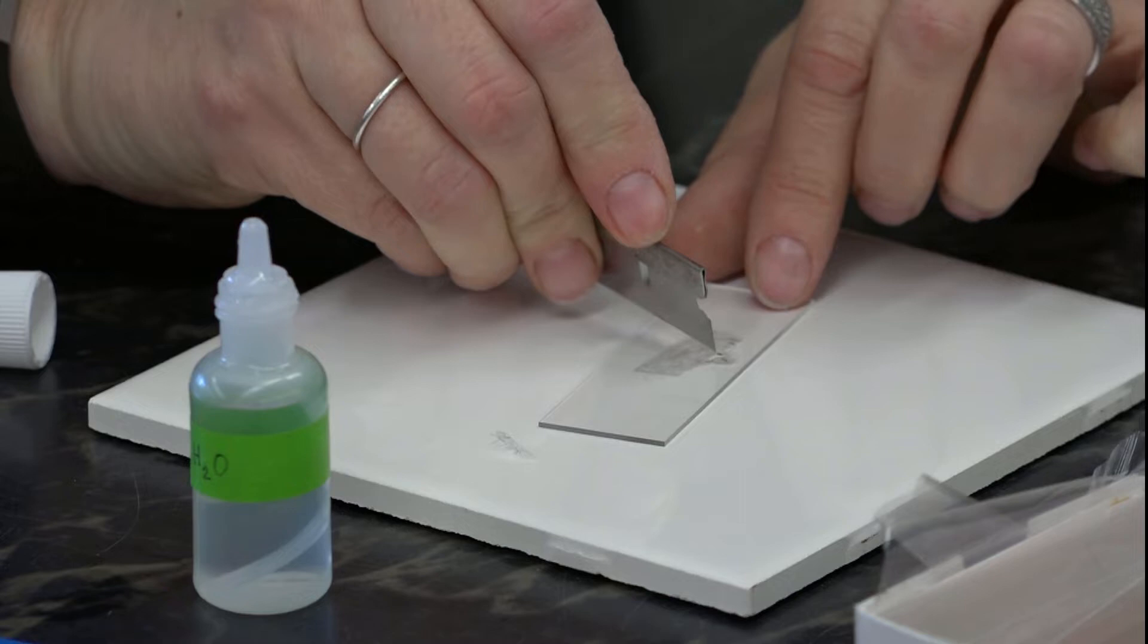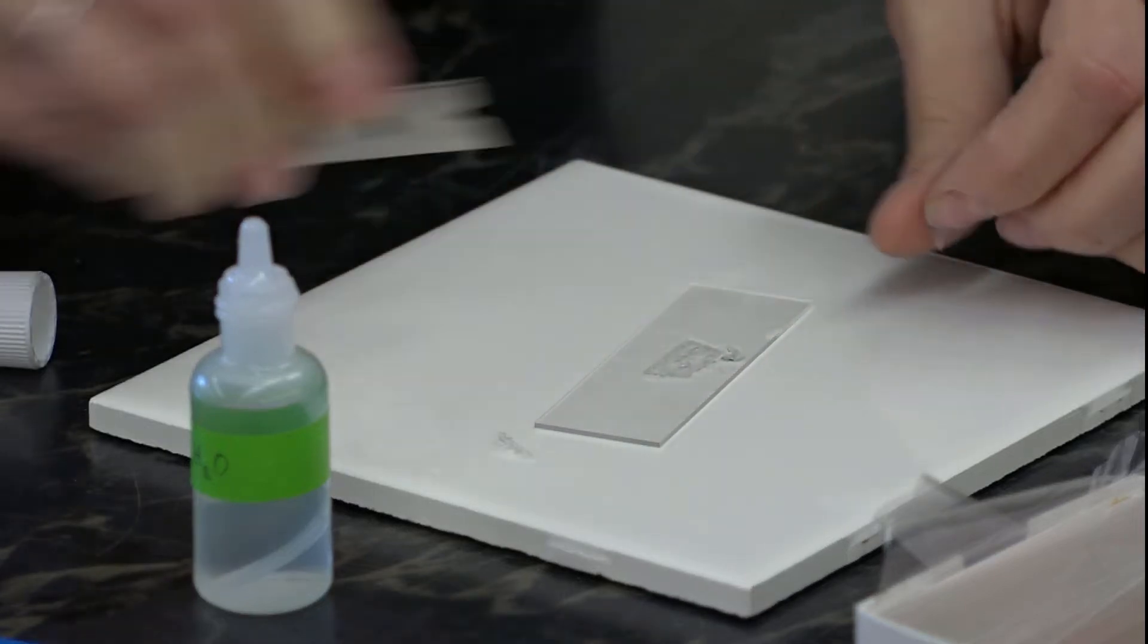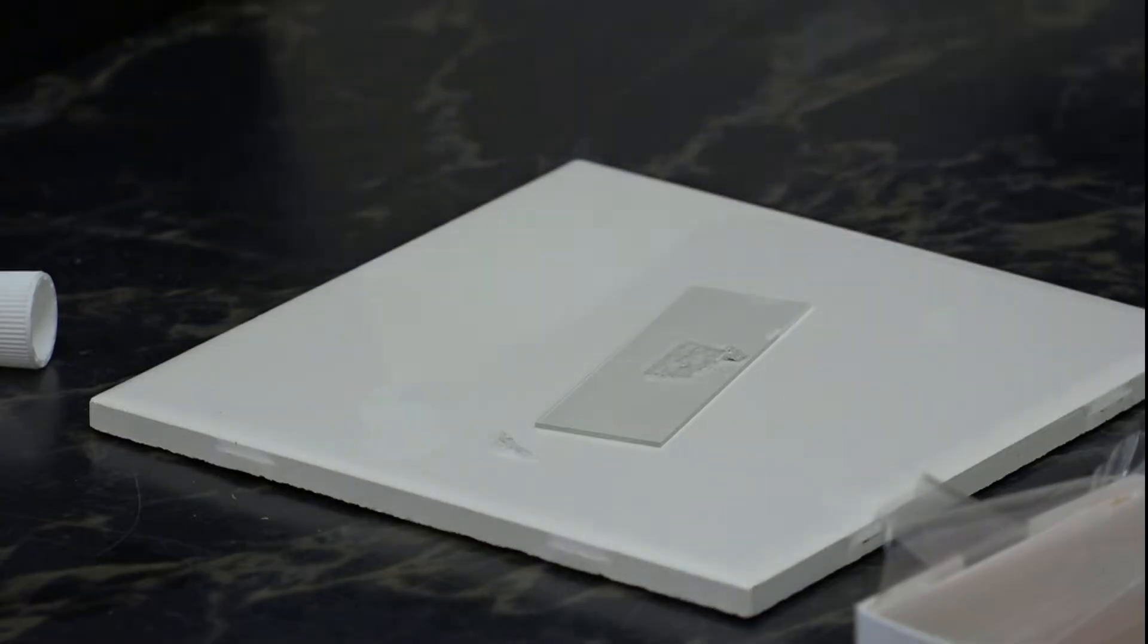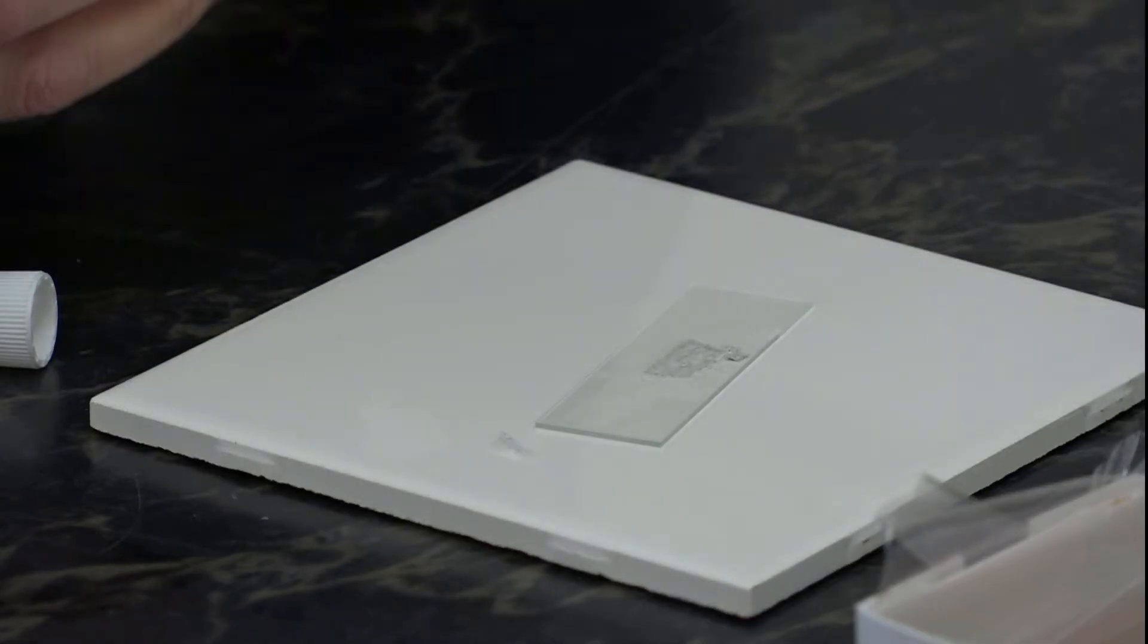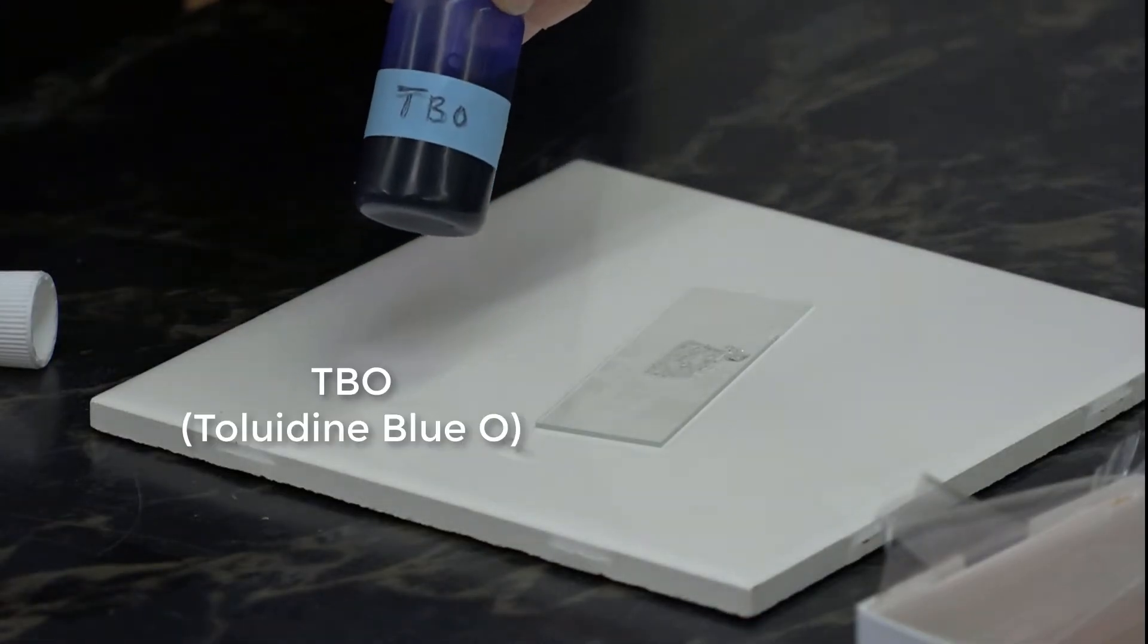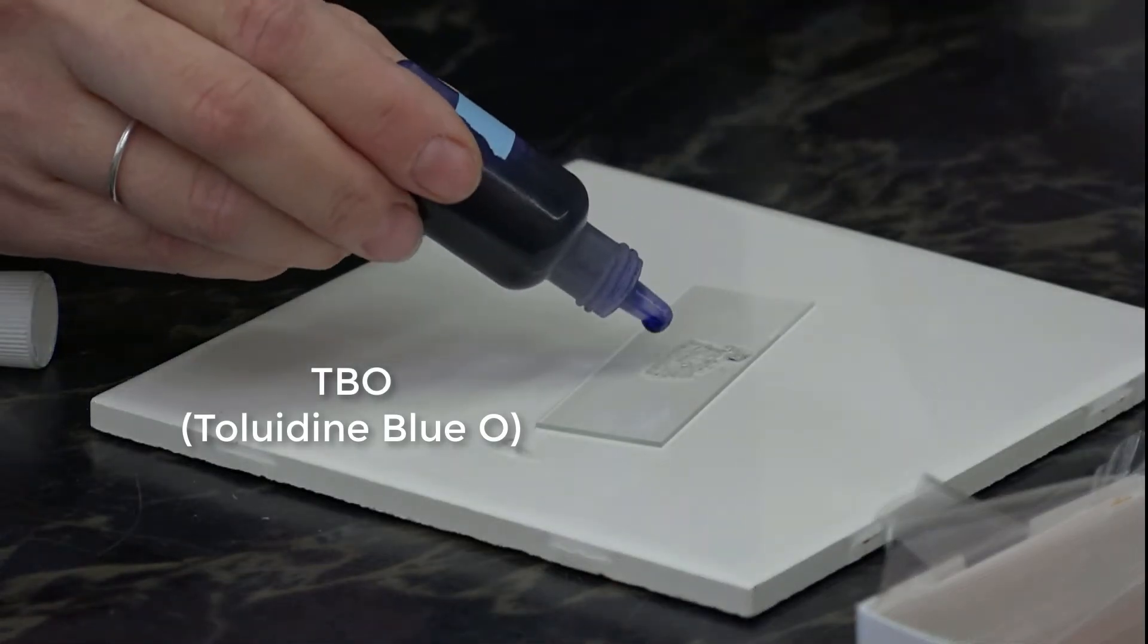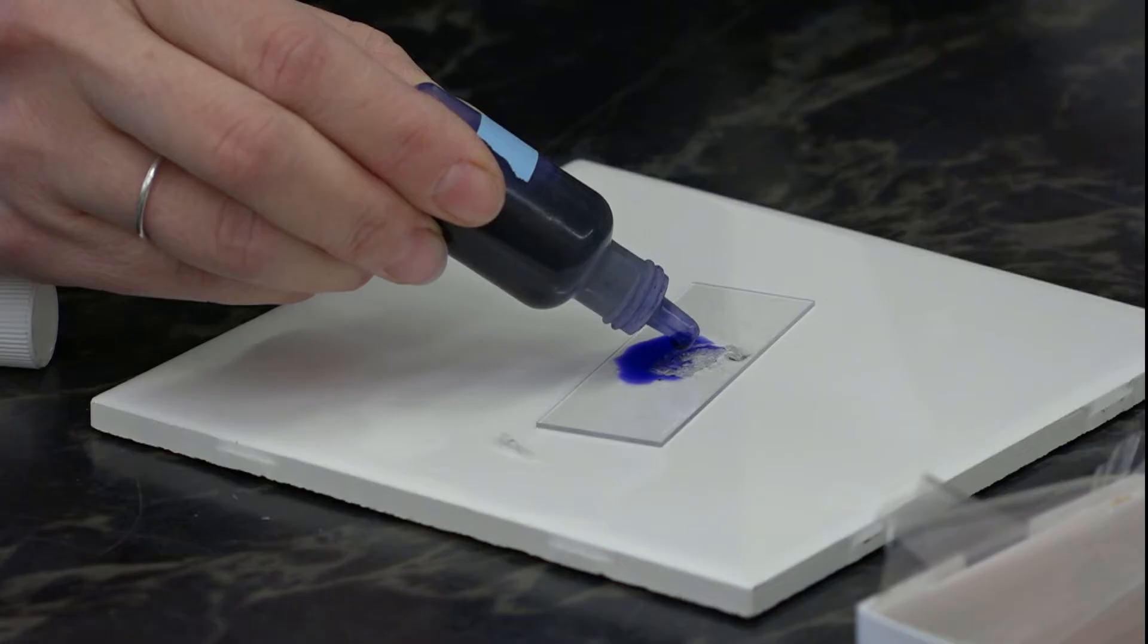Trim it down if you need to. This time we're going to stain it. We're going to add TBO. Just add a drop.